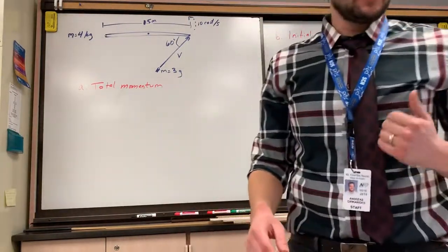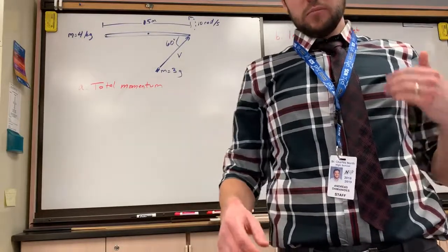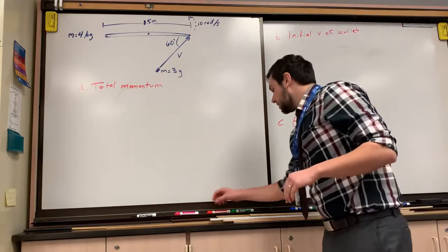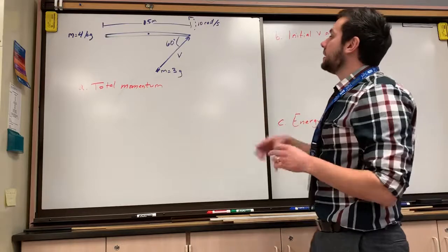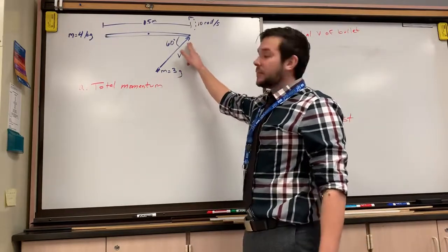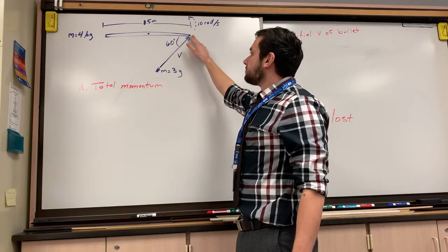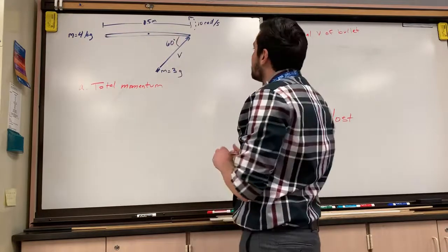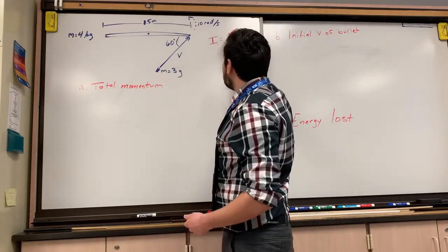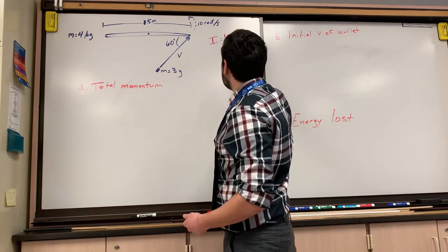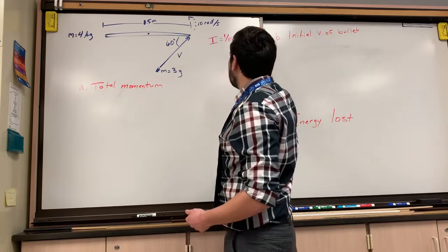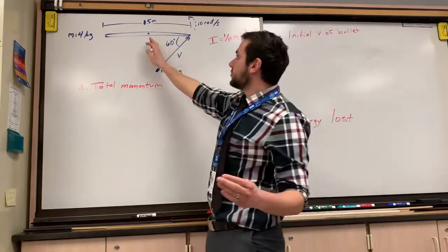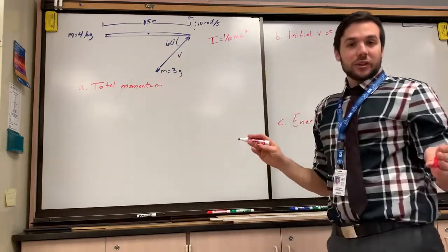We're going to walk through a way to solve a problem involving angular momentum with a collision between two objects. The problem specifies that a bullet is flying in at an unknown velocity and collides with a rod with a mass of four kilograms and a length of 0.5 meters. The moment of inertia of the rod is given as (1/12)mL², where L is the full length, not the radius from the axis of rotation.